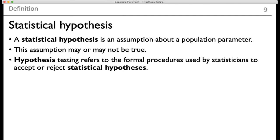Population parameters regarding mu and sigma are just examples — you might consider other population parameters also. Hypothesis testing is basically the set of formal procedures that statisticians use to accept or reject statistical hypotheses.